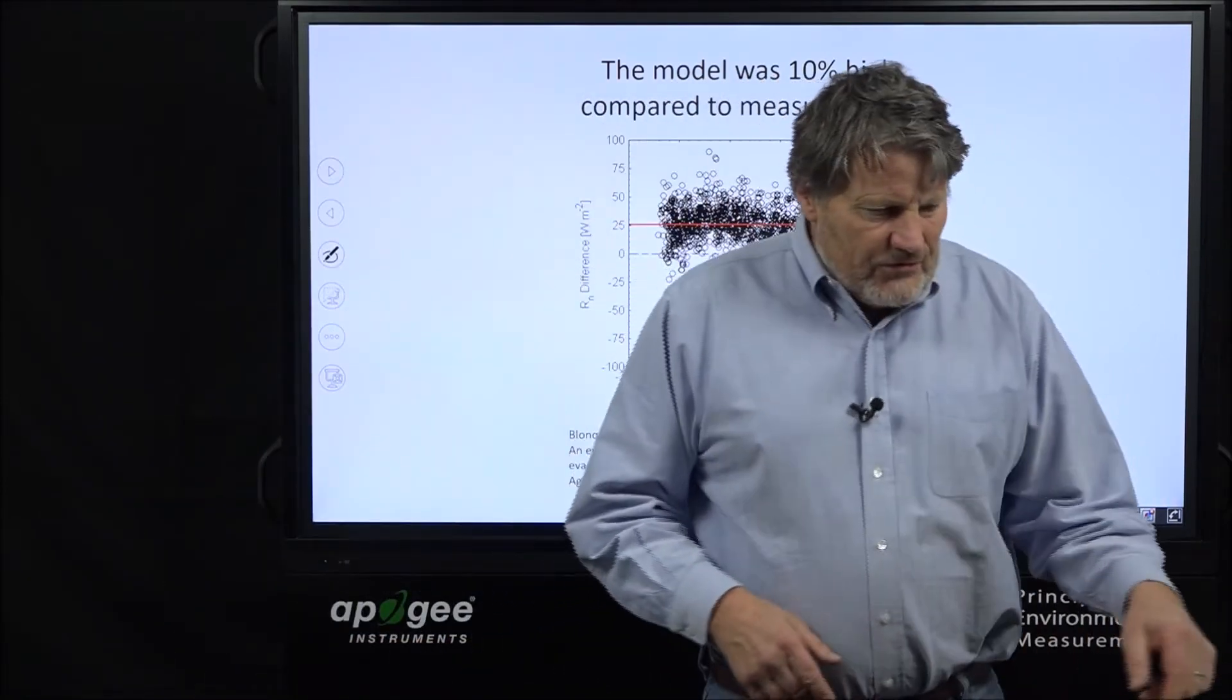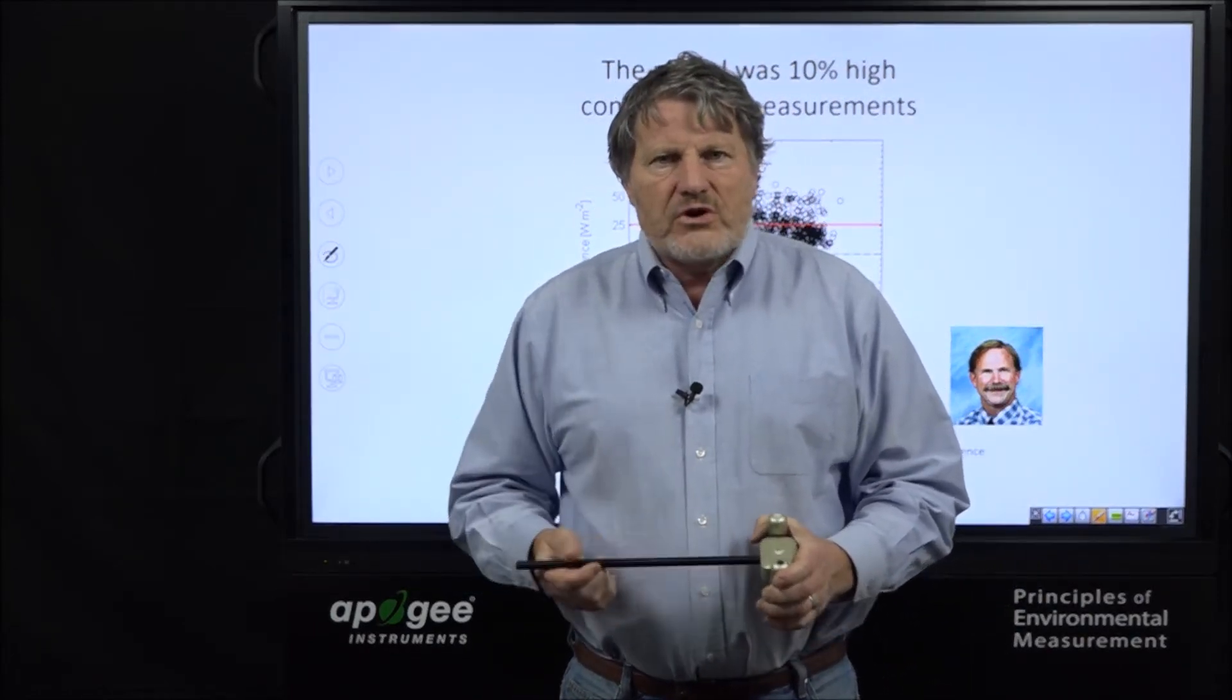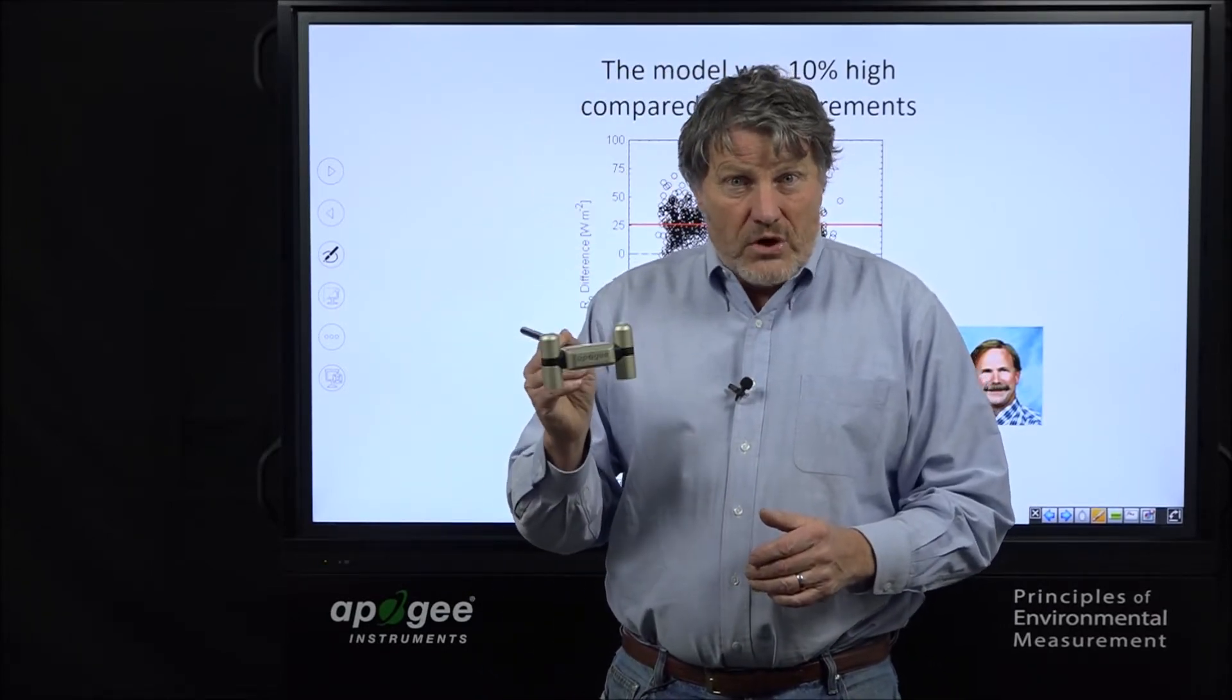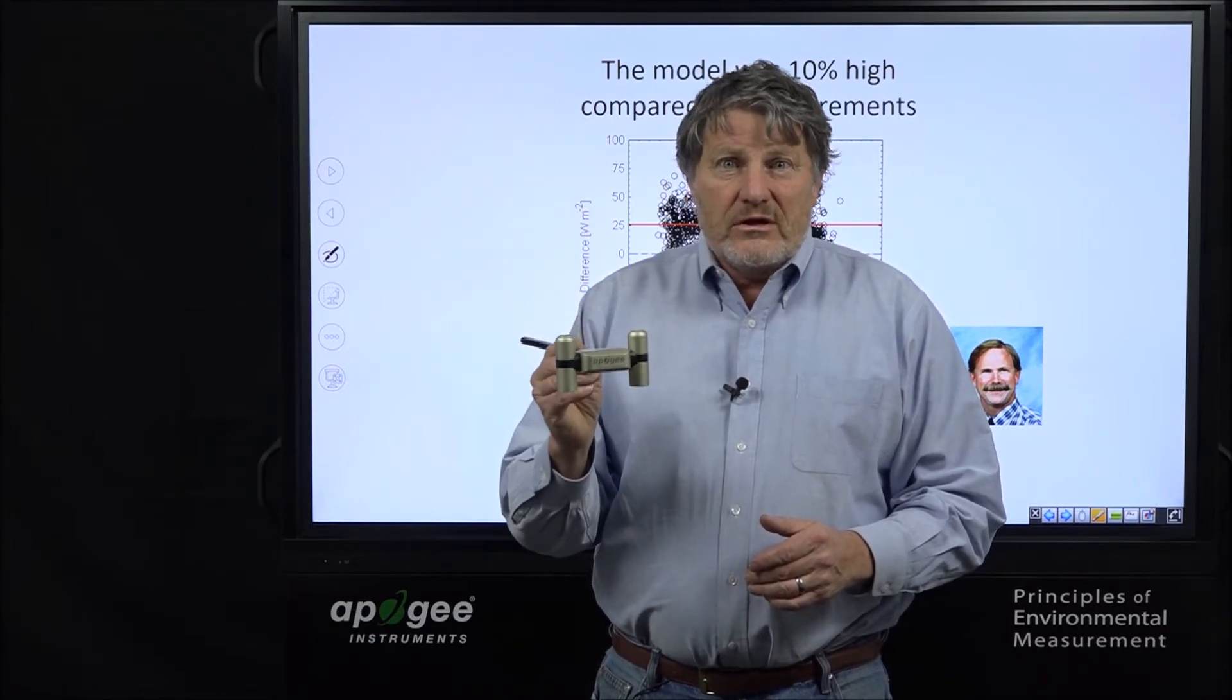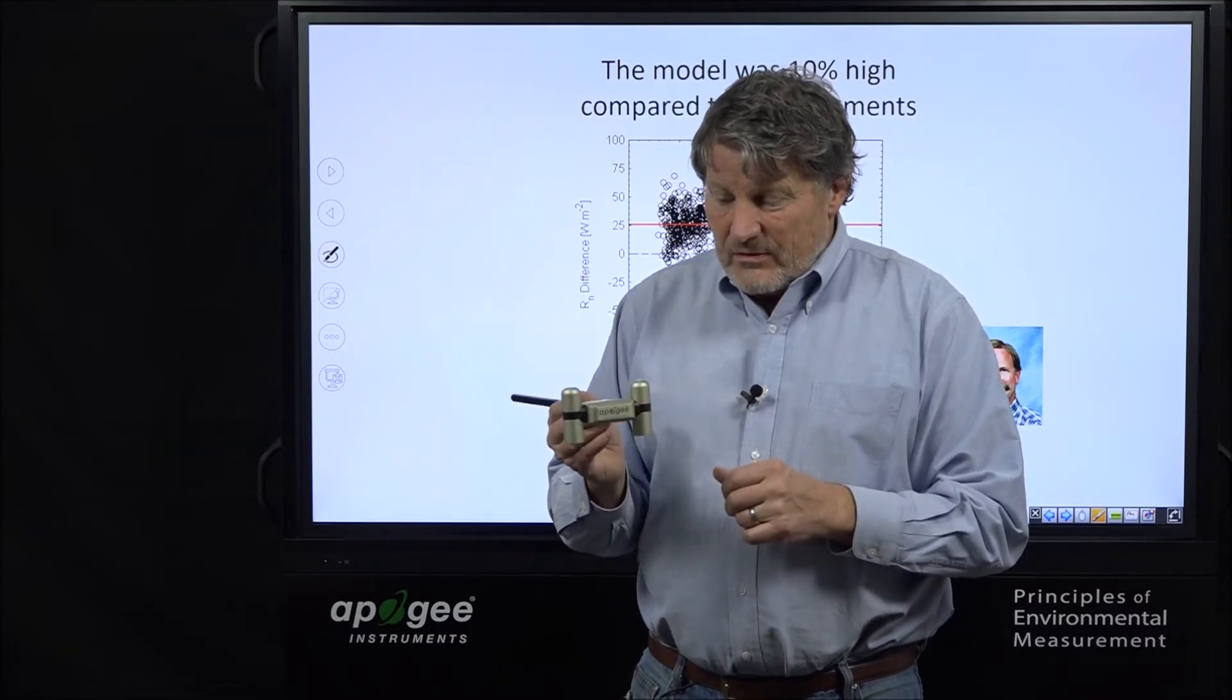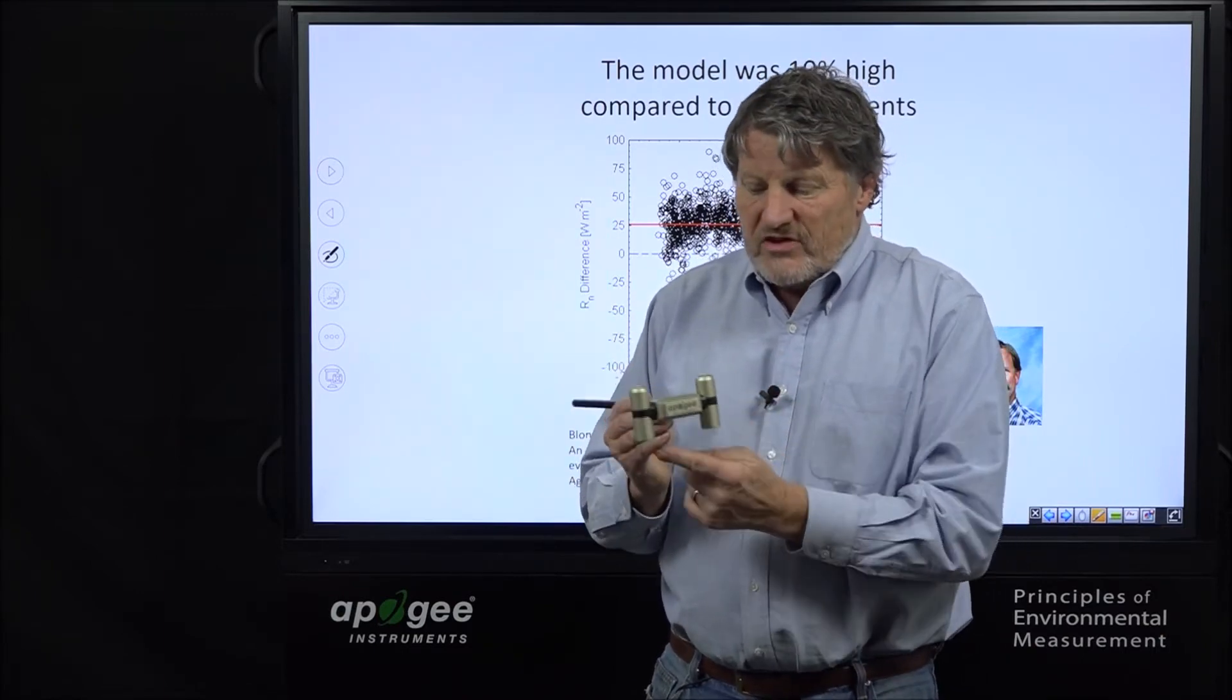Now, we fast forward a few more years and because Apogee Instruments has a long history of measuring these parameters, Apogee started working on a new design for a net radiometer that incorporated four components into a single instrument and has an intermediate price. This is the design that Apogee has just recently released after four years of refinement and testing. It's a four component radiometer, short wave in, short wave out, long wave in, long wave out.